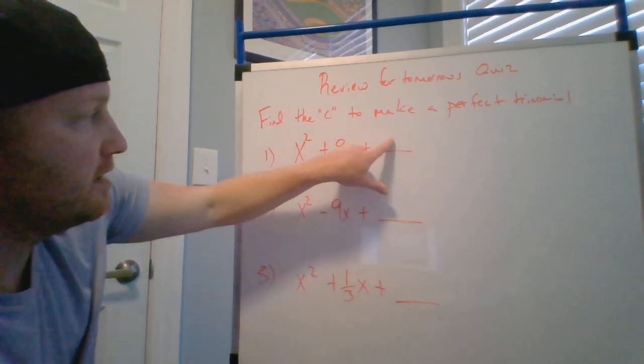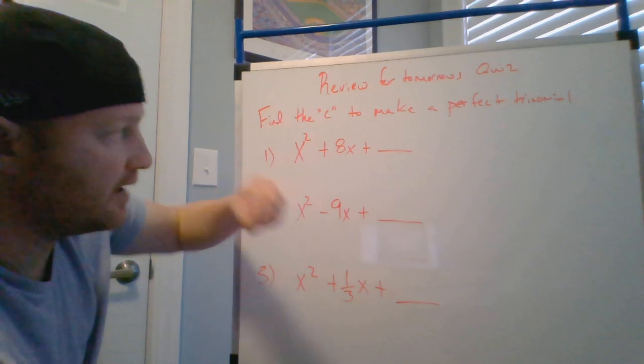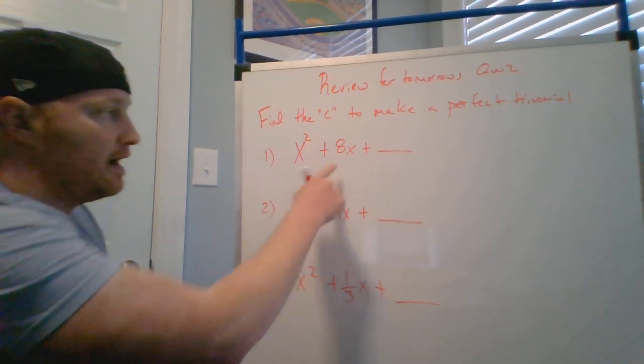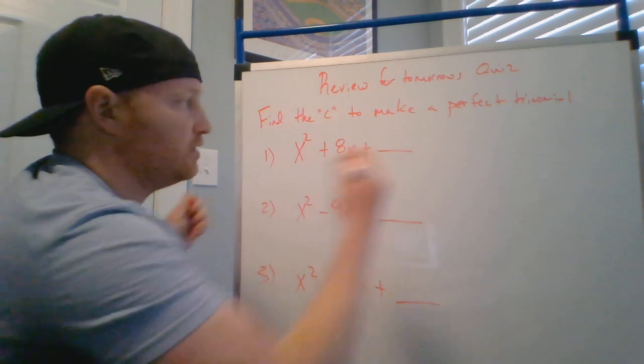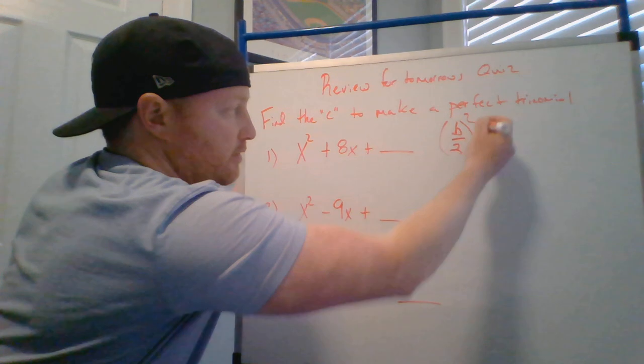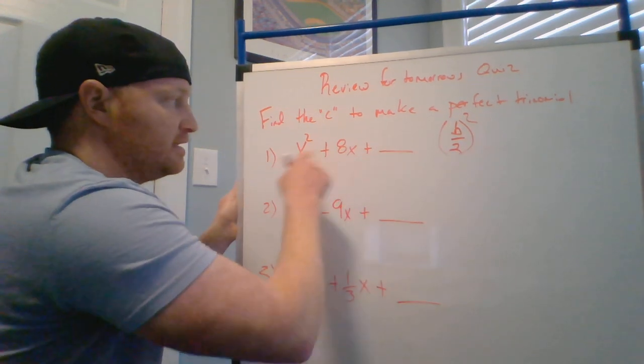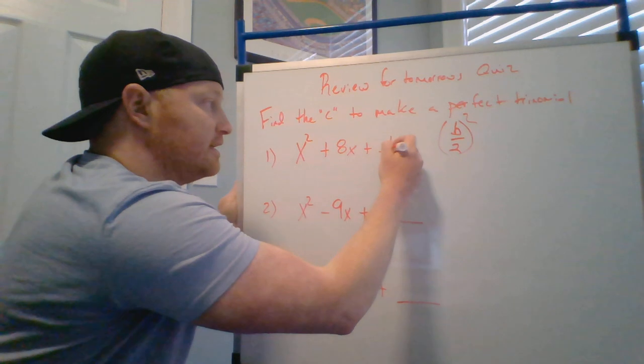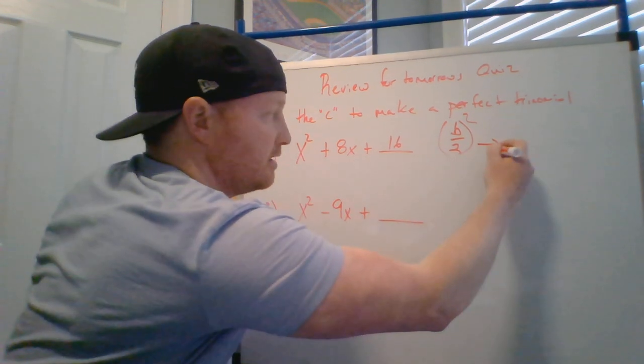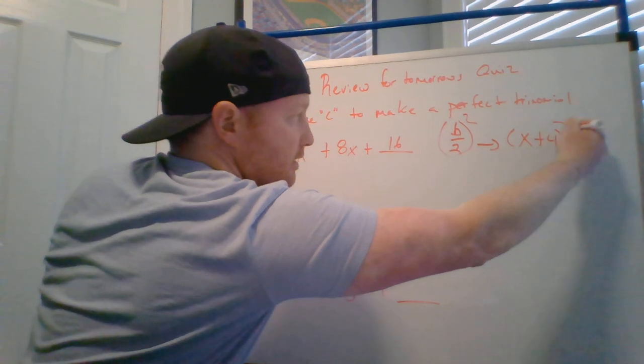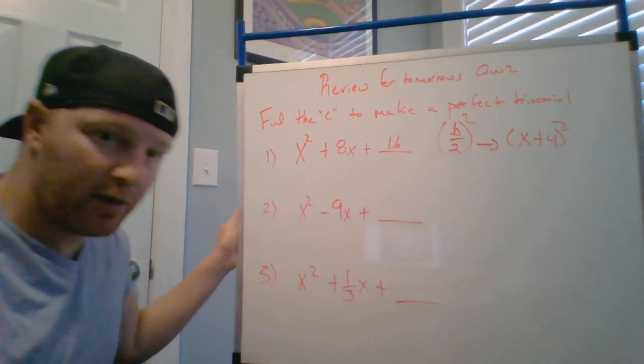First things first. This is always the first step in identifying a perfect trinomial for completing the square. We always take half of the B and we square it. Remember this is the B, this is the A. Half of B is 4, squared is 16. So then this simplifies into x plus 4 squared. That's the whole purpose for this.